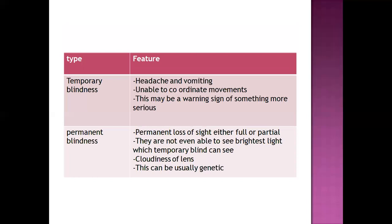In temporary blindness, there are symptoms like headache, vomiting, and inability to coordinate movements — this may be a warning sign of something more serious, potentially progressing to permanent blindness. In permanent blindness, there is complete or full loss of vision; the person cannot see even the brightest light and visual acuity comes down to zero. There is also cloudiness of the lens, and permanent blindness is often seen as genetically caused.